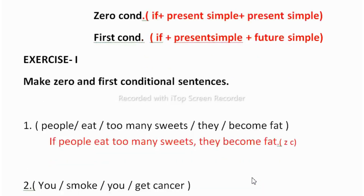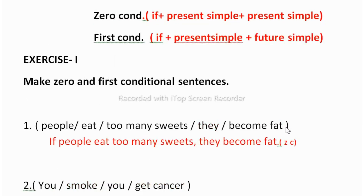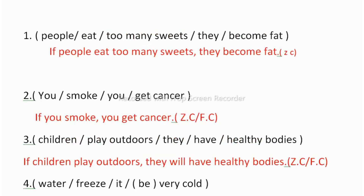The first question is: 'People eat too many sweets, they become fat.' Here you have to add zero conditional. The structure of zero conditional is: if + present simple + present simple. So the answer is: 'If people eat too many sweets, they become fat.' This is your zero conditional sentence.